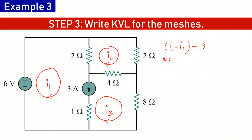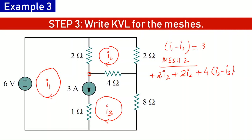So we write the KVL equation for mesh 2 only, starting from that point: plus 2·i2, plus 2·i2, plus 2·i2, plus 4(i2 minus i3) equals zero. We now have three variables — i1, i2, and i3 — but only two equations, so we need one more. For this, we will not use mesh 1 or mesh 3 individually, but instead take an outer loop to write the third equation.